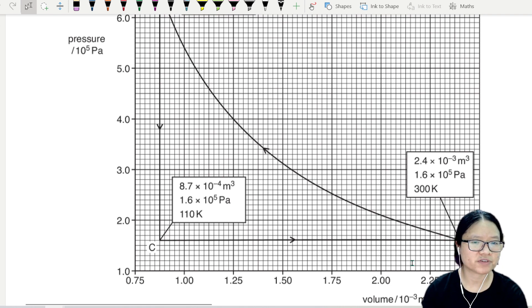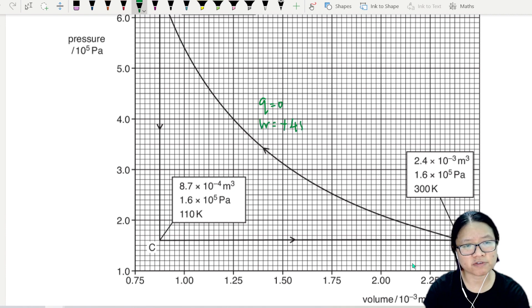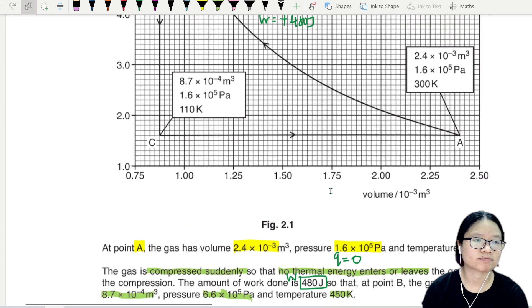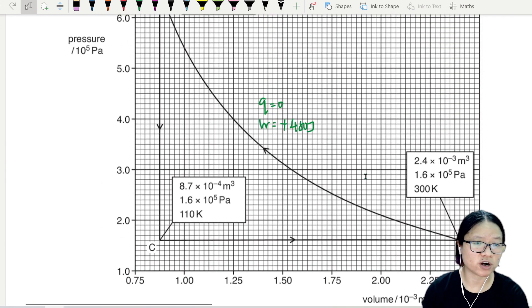q is zero and the w is positive 480 joules work done. The amount of work done, yes, the 480 joules.